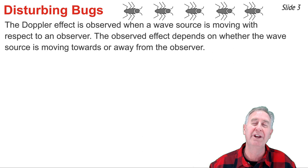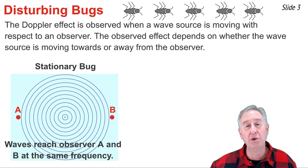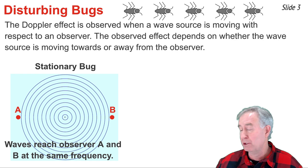Let's suppose that points A and B in the diagram represent two observers in stationary boats upon the water. The Doppler effect would not be observed in this situation because there is no motion of the bug relative to the observers.